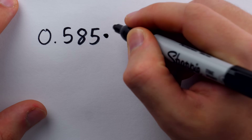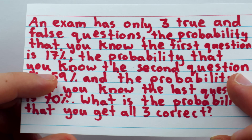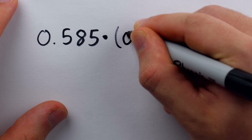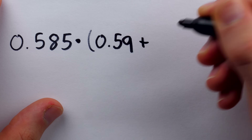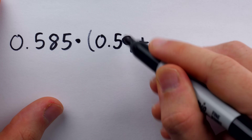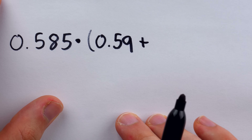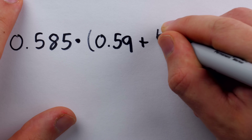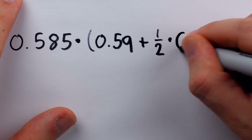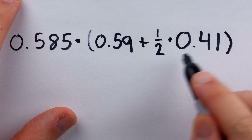Question two says we have a 59% chance of knowing the answer. So there's a 0.59 probability that we know the answer to the second question, and then for the remaining 41% chance that we don't know the answer, half of that probability we'd be getting it correct just by luck — because it's true or false. So we write plus one-half multiplied by 0.41.